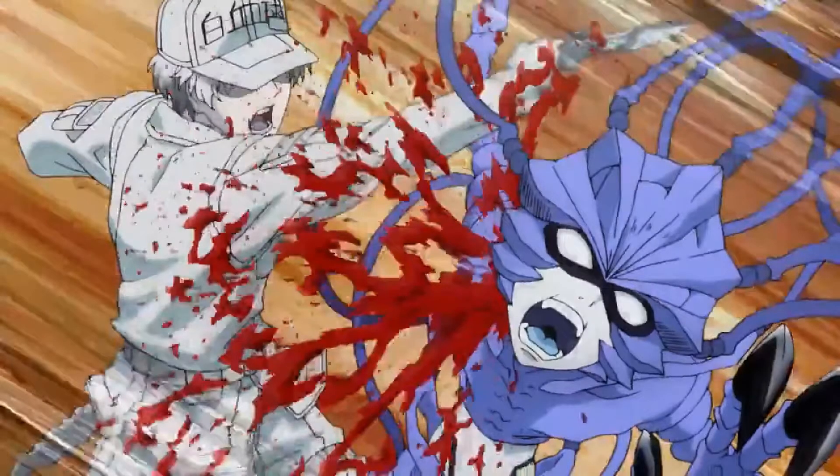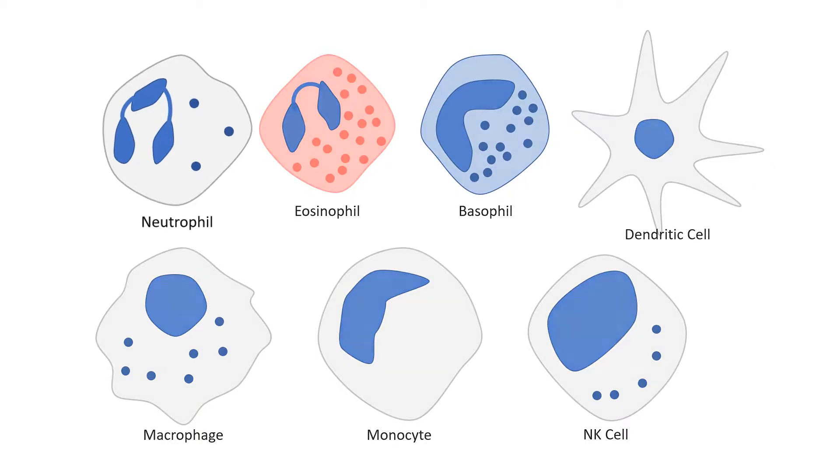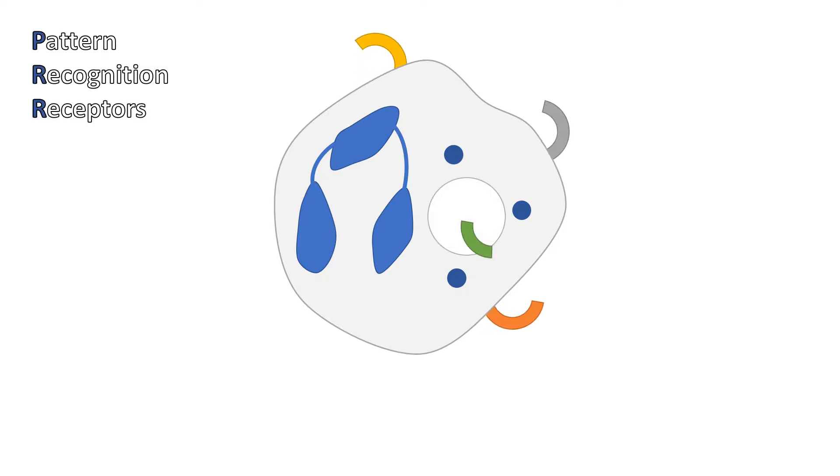The invasion was swiftly thwarted by a group of patrolling white blood cells, or neutrophils. Neutrophils are a part of your innate immune system and they can be identified with their multi-lobed nucleus. White blood cells have receptors known as pattern recognition receptors, PRRs for short.